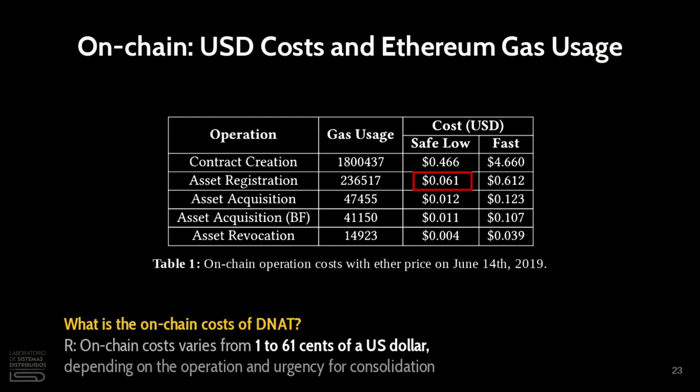The costs can be balanced with the fact that DNAT has the capability of asset compensation. Regarding the amount spent on registration, the asset owner can recover the value if someone uses their dataset. Today these costs have changed considerably, but using other networks such as Ethereum Classic would make it affordable again.